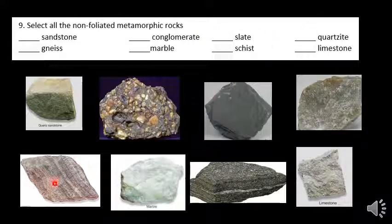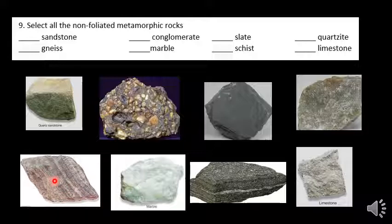Gneiss is down here. This is a metamorphic rock, but again we see the lines and banding in there, so we are not going to check that one because it is foliated. We're looking for non-foliated.